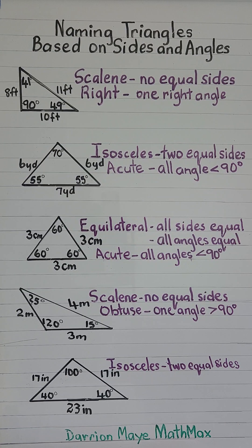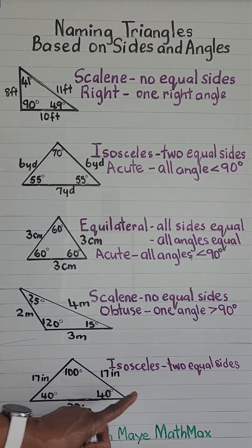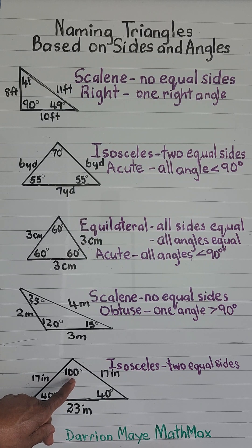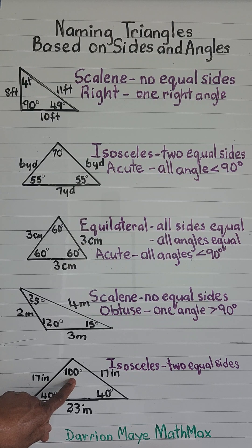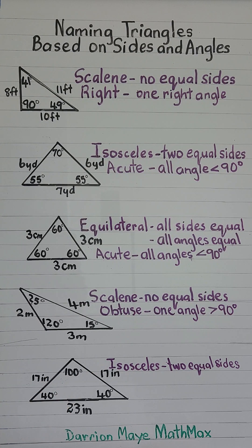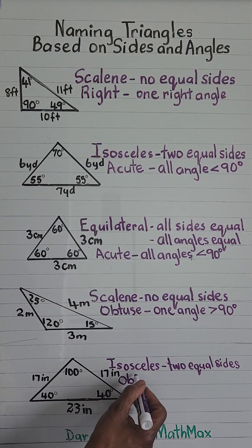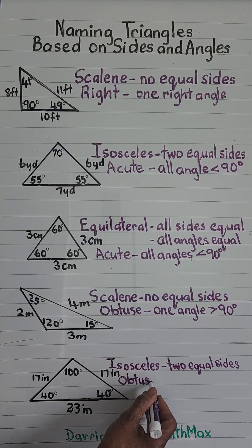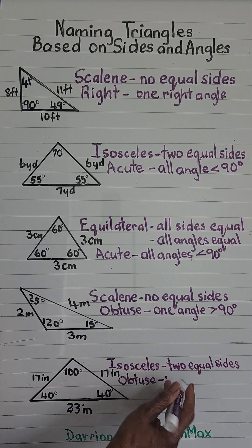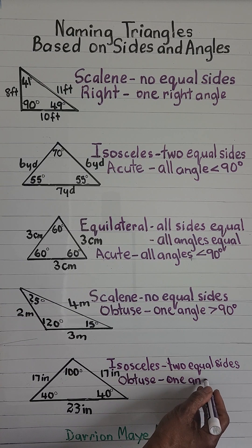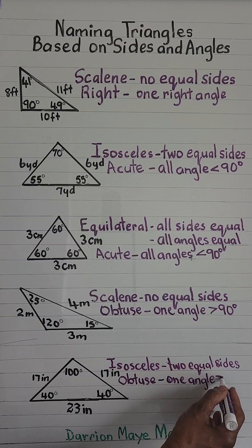Finally, this isosceles triangle has two equal sides and angles of 100 degrees, 40 degrees, and 40 degrees. This is an obtuse triangle because it has one angle which is more than 90 degrees. Obtuse: one angle more than 90 degrees.